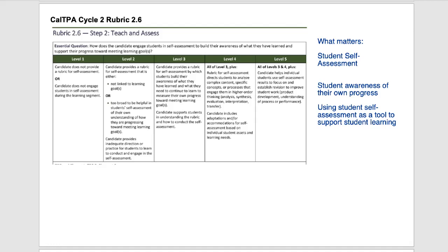Hi everybody, Johnny here. I'm going through Cal TPA Cycle 2, Rubric 2.6. This is still under Step 2, Teach and Assess. The essential question is: how does the candidate engage students in self-assessment to build their awareness of what they have learned and support their progress toward meeting learning goals?